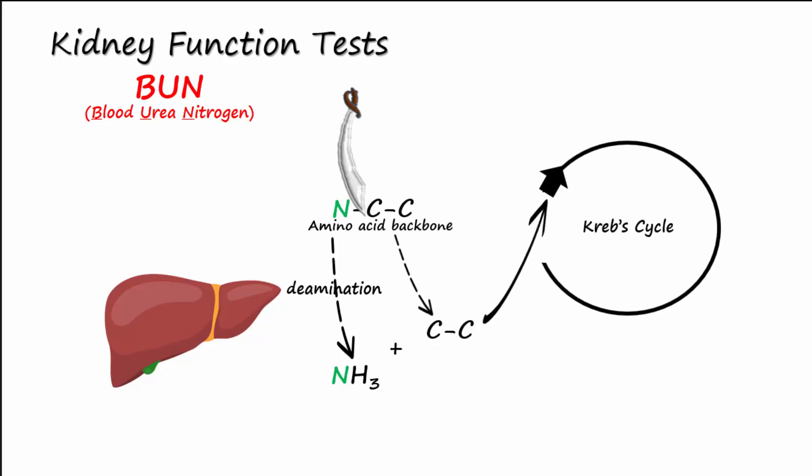The removed amino group is ammonia, or NH3, and is toxic to the body. So enzymes in the liver add a carbon dioxide molecule onto it to form the much less toxic urea in a process known as the urea cycle. Urea can then be excreted out of the body by the kidneys.